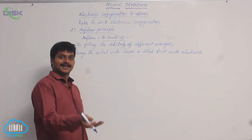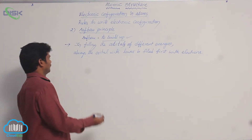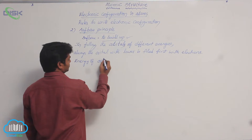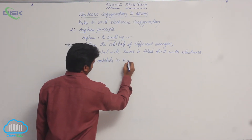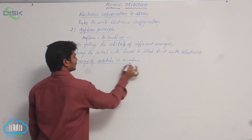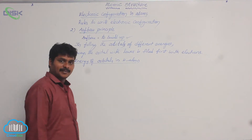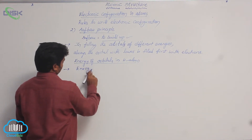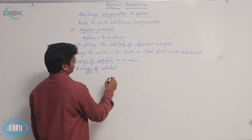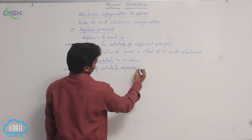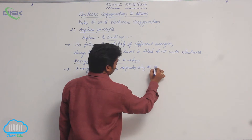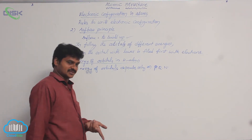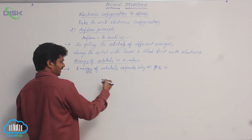Now let's see how to compare the energies of different orbitals. First: energy of orbitals in the hydrogen atom. The energy of orbitals in a hydrogen atom depends only on the principal quantum number. That means if there is a change in n, there is a change in energy. That's why we look at the energy order for orbitals in the hydrogen atom.